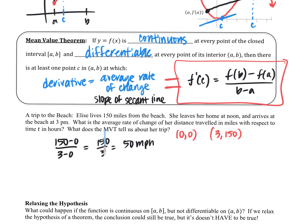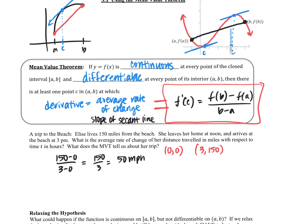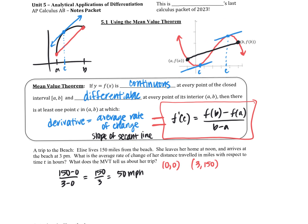AP is totally down with you using MVT for mean value theorem instead of writing it all out. What does the mean value theorem tell us about her trip? If her average rate was 50 miles an hour, and her driving was continuous and differentiable, then at some point on her trip she had to be going 50 miles an hour — just because her average was 50 miles an hour.